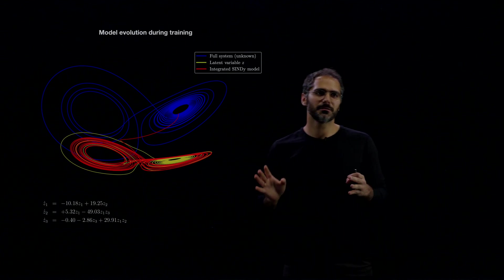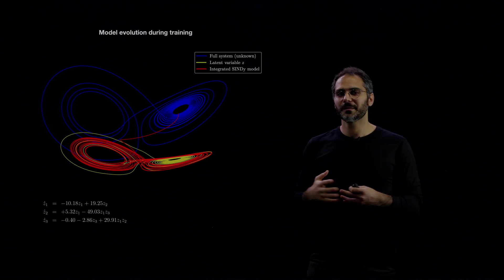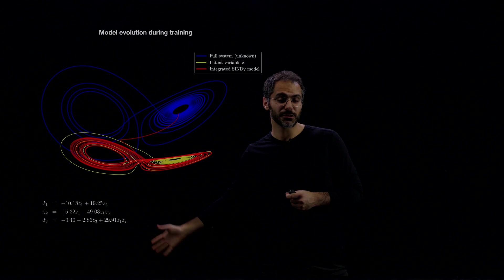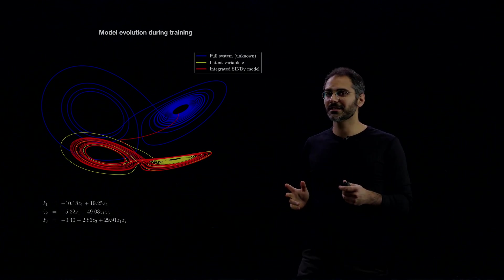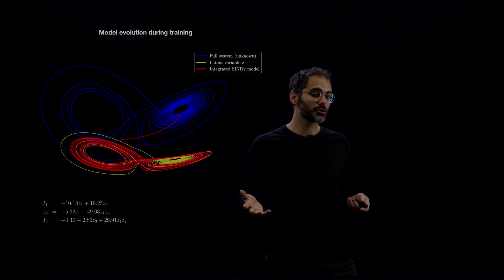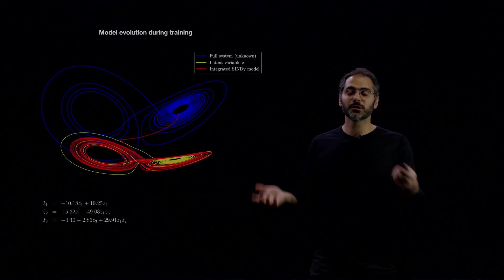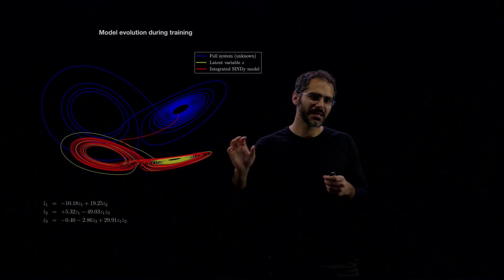And here comes the important part about improving the method. As you can see the model that's discovered here is different from the model that I showed you before. And this is to highlight the fact that the solution is not going to be unique depending on how you weigh your losses, which losses you include, the architecture of the neural network, the dimension of the embedding, there are so many hyperparameters.